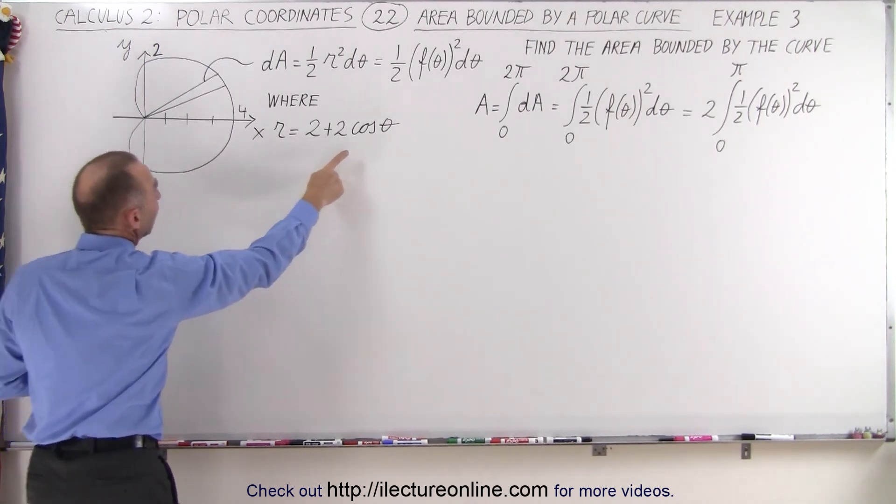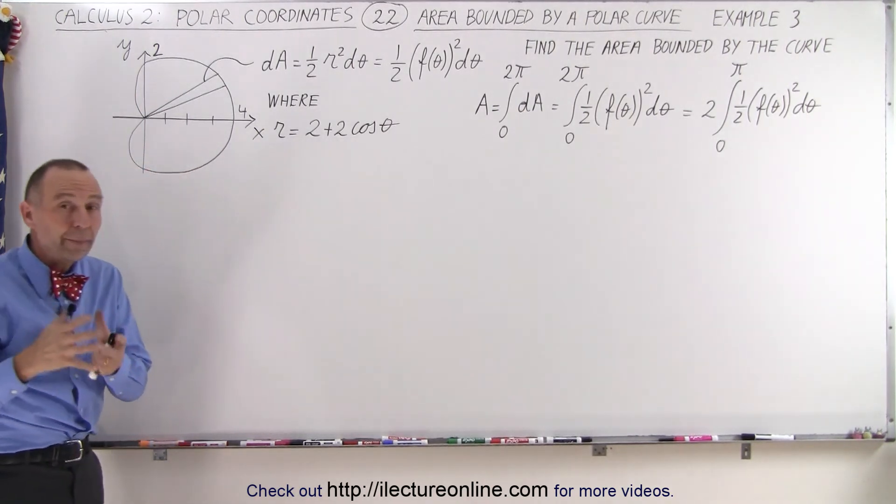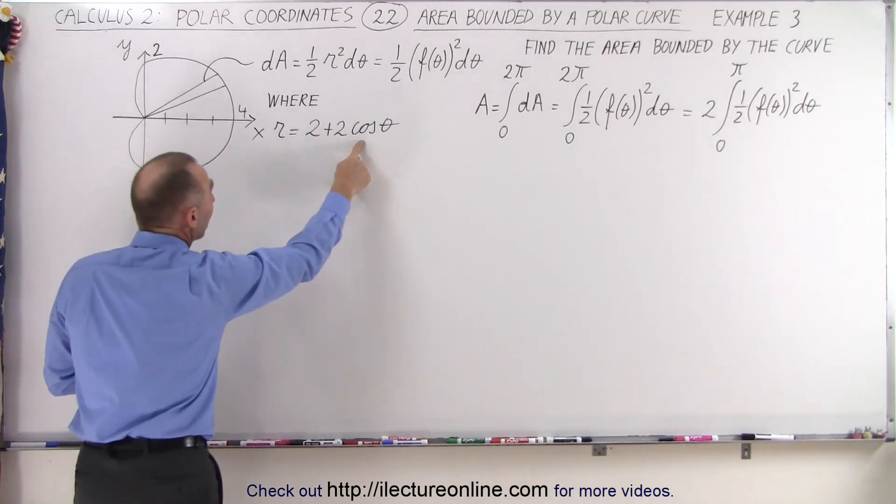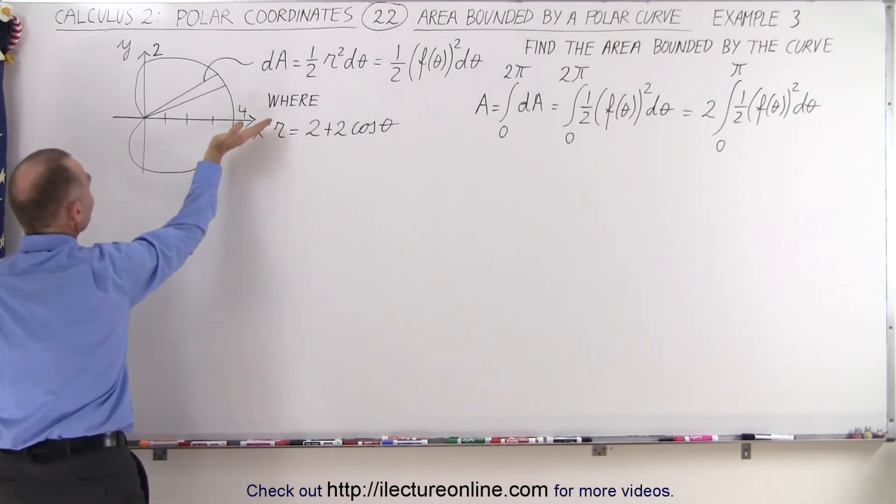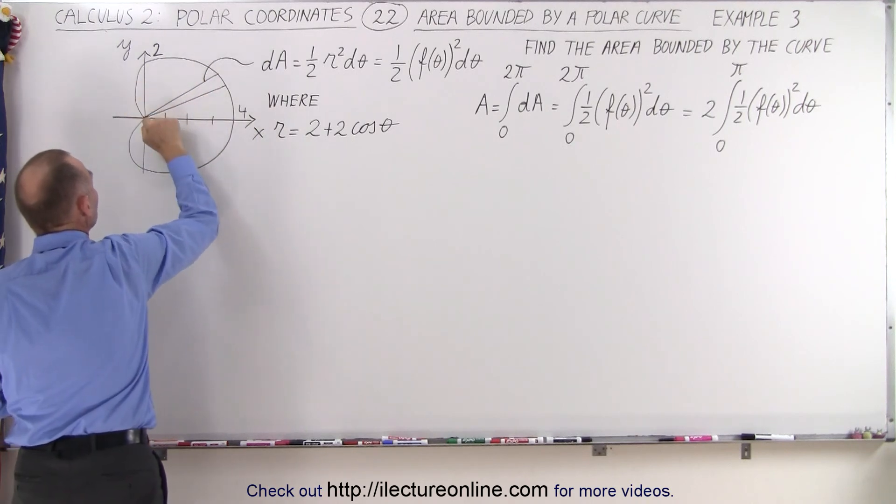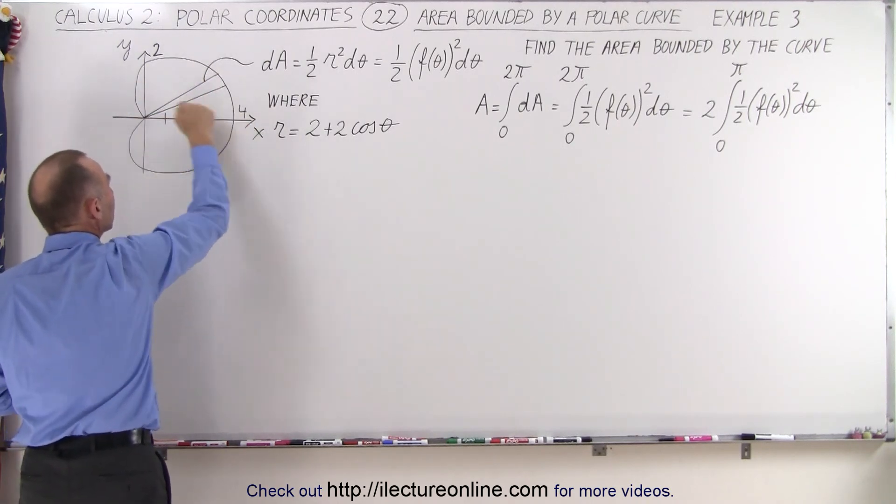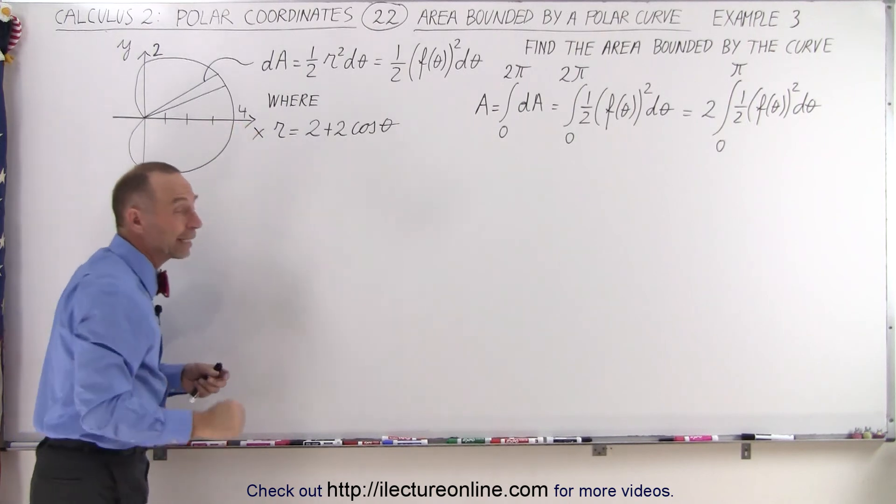And when the angle is 180 degrees, which is pi, the cosine of pi is negative 1. Negative 1 times 2 is negative 2, plus 2 is 0. So after 180 degrees or pi, you come to this point right here. And then this is the second part. You need another pi to come back to the beginning.